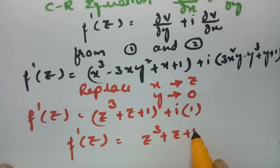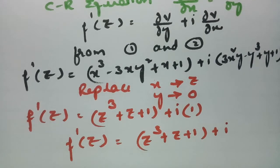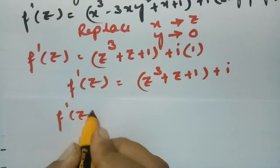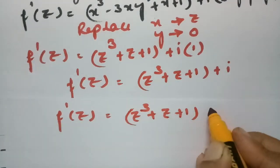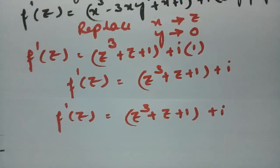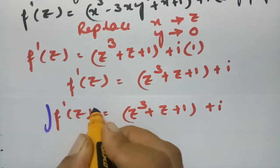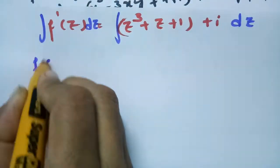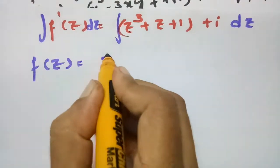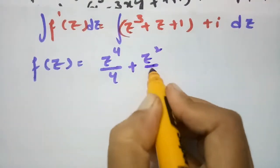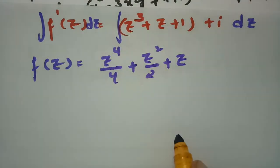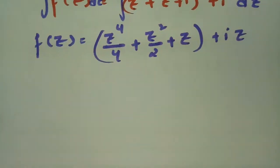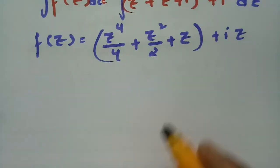So f′(z) equals z³ + z + 1 + i. Now I am going to integrate both sides with respect to z. After integrating, f(z) equals z⁴/4 plus z²/2 plus z plus i times z. This is our analytic function.